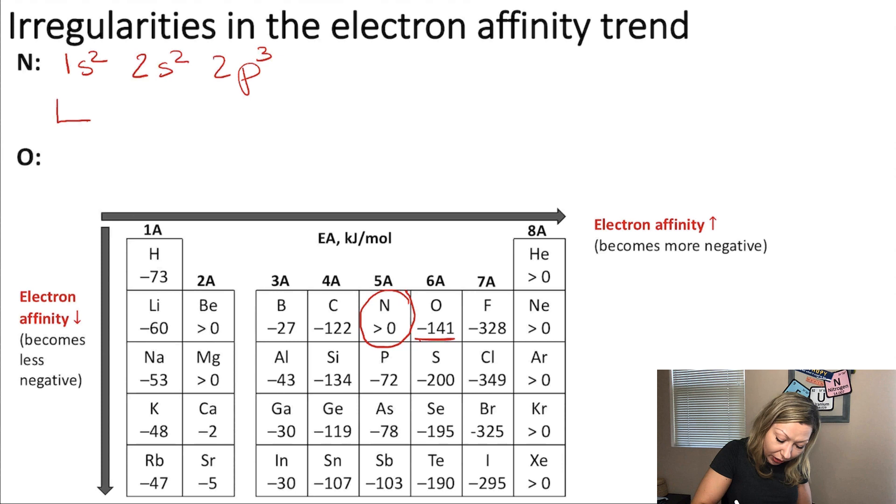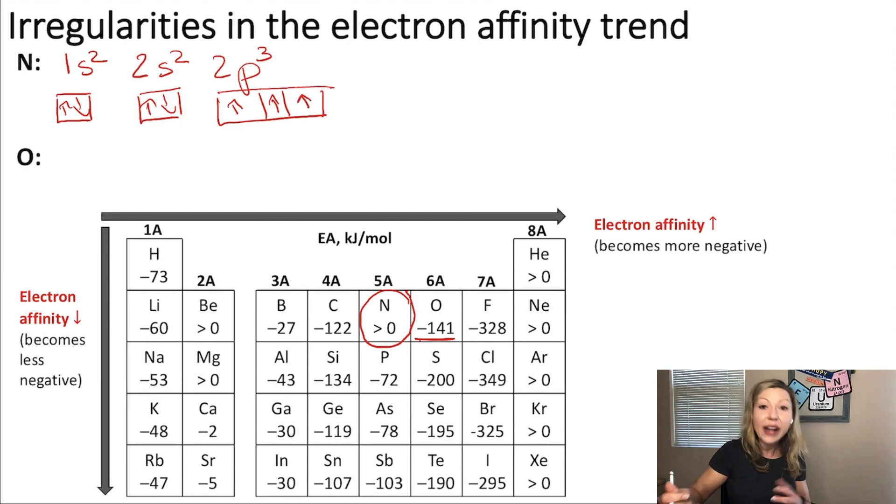Now, the electron orbital diagram, I'm going to do my little boxes down here. We have 2 electrons here, 2 electrons here, and on the p orbitals, we are going to have 3 electrons. So, when you are adding an extra electron to this nitrogen atom, it has to double up with one of the other electrons, right? So, you would add an extra electron right here, for example.